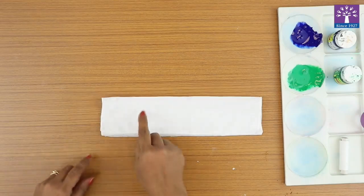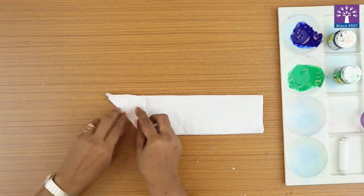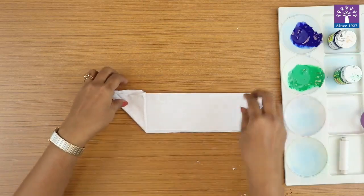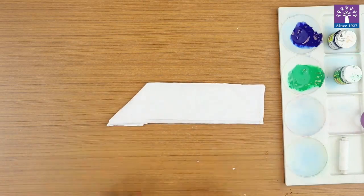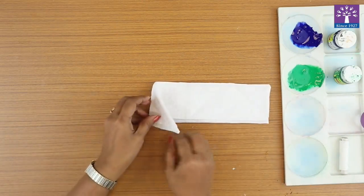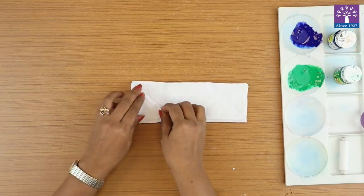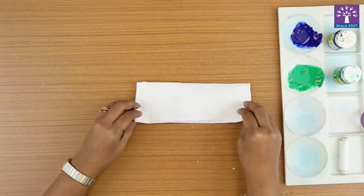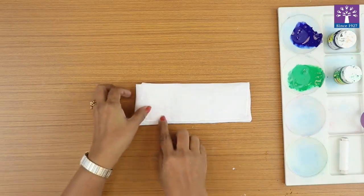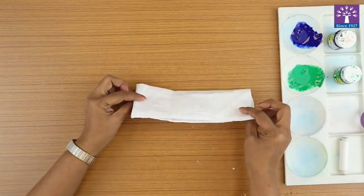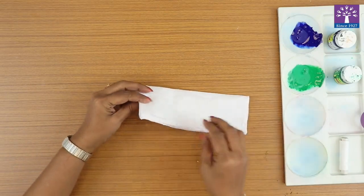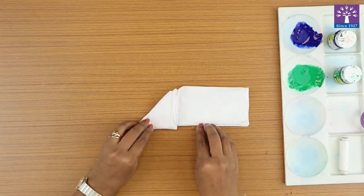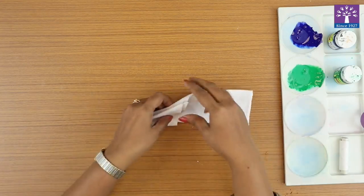Now you're going to fold a triangle from one corner like this. Turn it around and again fold a triangle. Again turn the kerchief around and fold it. Follow the steps.